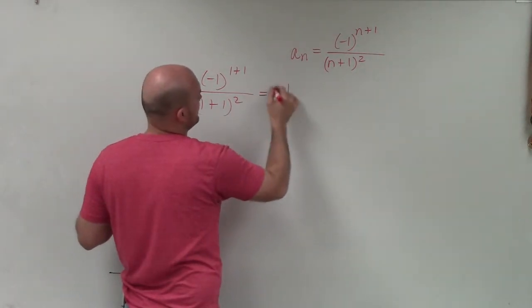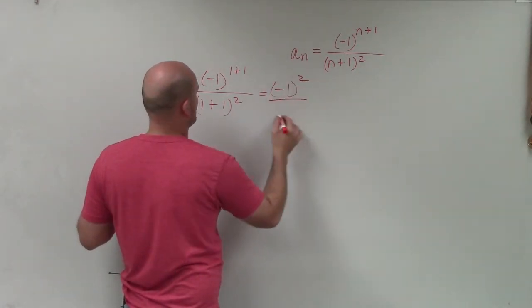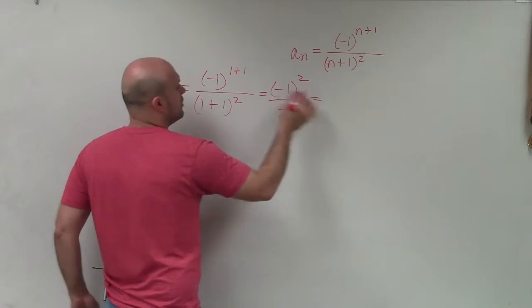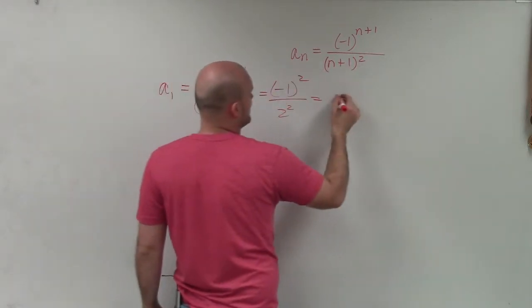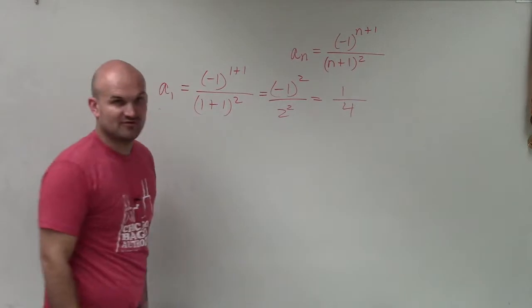Now I can just simplify. So that's negative 1 squared over 2 squared. Well, any negative number raised to an even power is now going to become positive. And 2 squared is equal to 4.